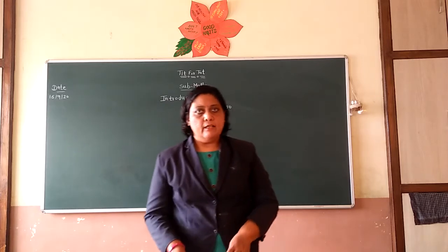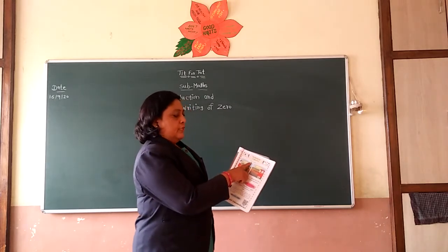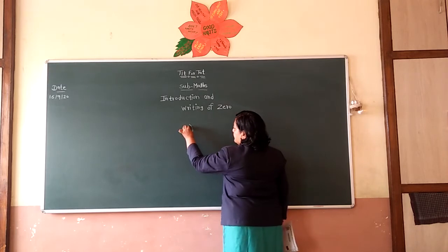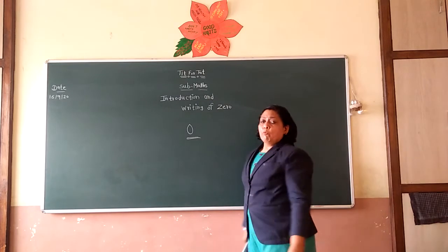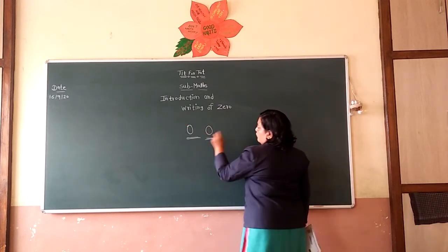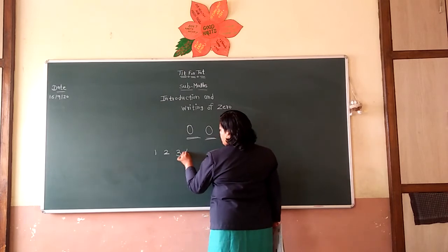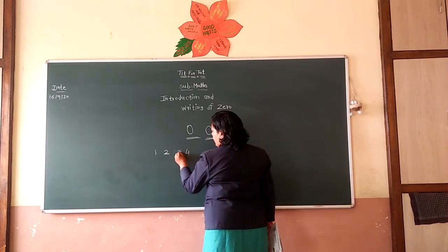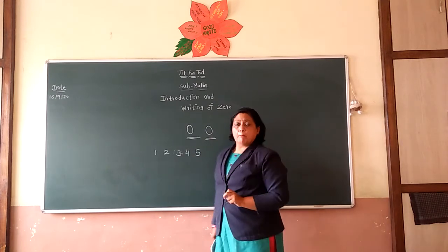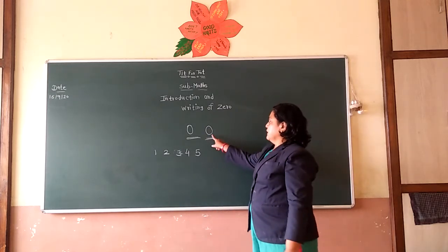Now let's restart our lesson — page number 21, introduction and writing of zero. This is how you write zero. This is the sign of zero. You know one, two, three, four, five — numbers one to nine you know. But this is the sign of zero — we write it like this.